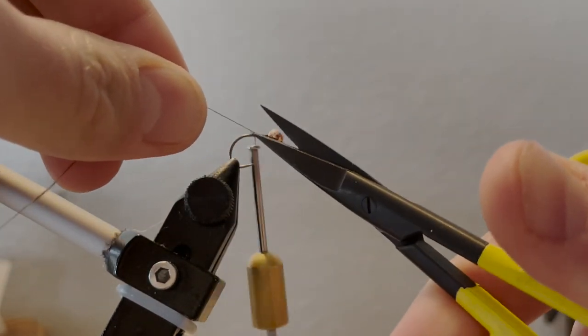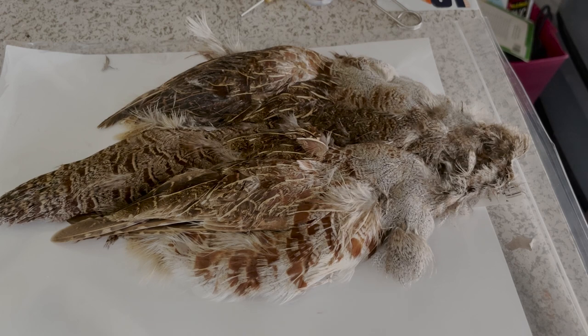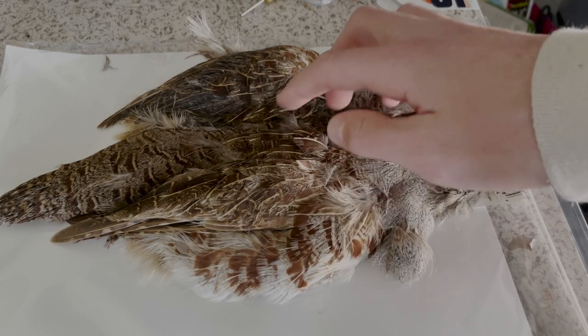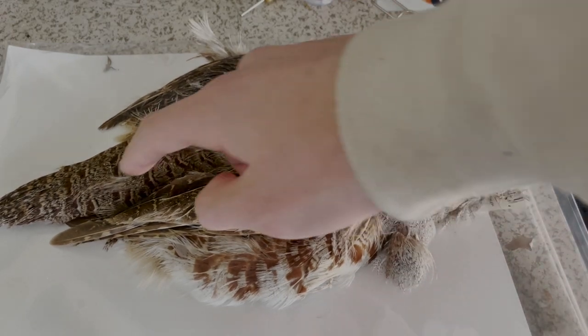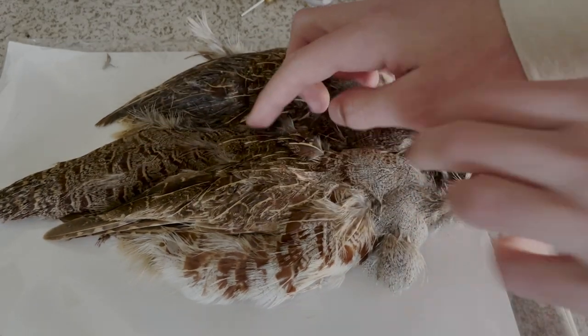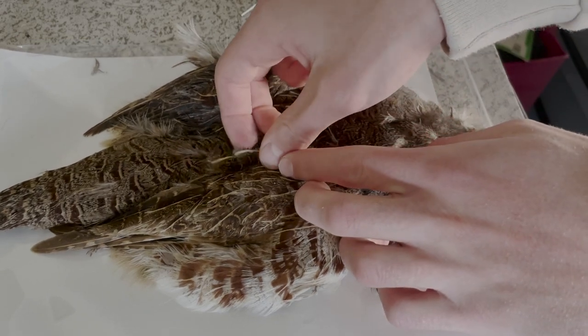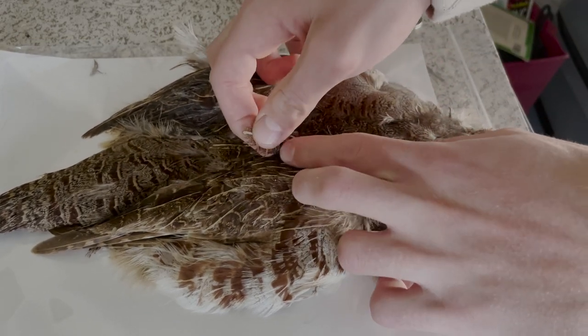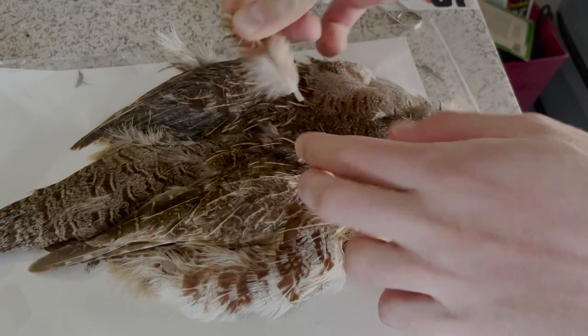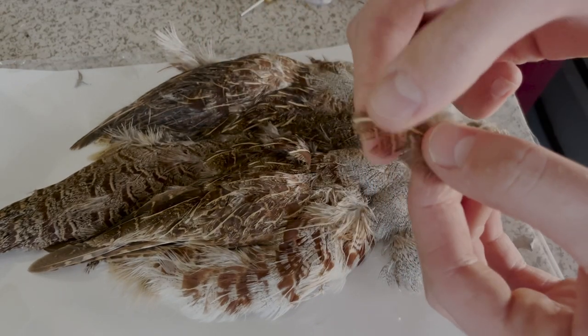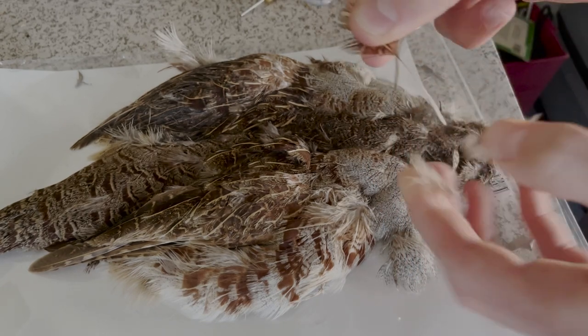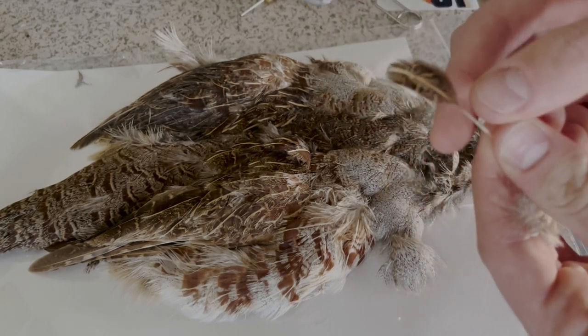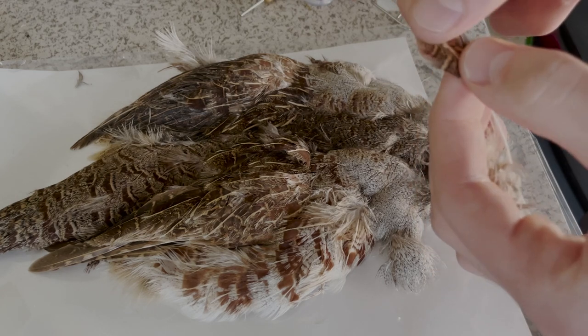For the tail, you want to select a feather from this partridge cape that's down the center and a little bit closer to the tail. These feathers here are a little bit stiffer and a little bit longer with more darker markings. You want to strip the fuzzy bits off of the feather here so you're left with just the tip of the feather.